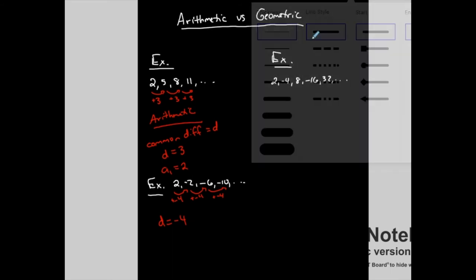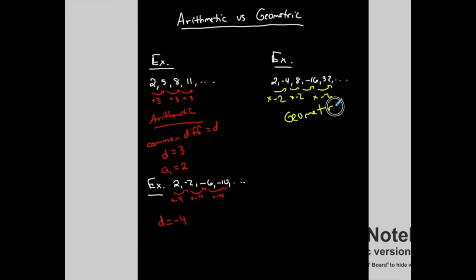Now let's look at the other sequence: 2, negative 4, 8, negative 16, 32. What am I doing from one term to the next? It looks like I am multiplying by negative 2 — every term has negative 2 multiplied by it to get to the next one. This is a geometric sequence. A geometric sequence is one where you multiply each term by a number to get to the next. We have what's called a common ratio, represented by lowercase r. In this case, r equals negative 2.